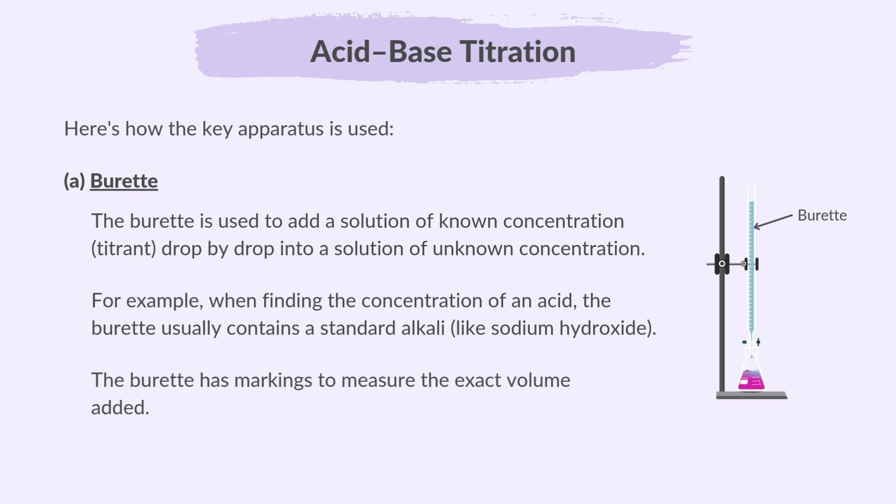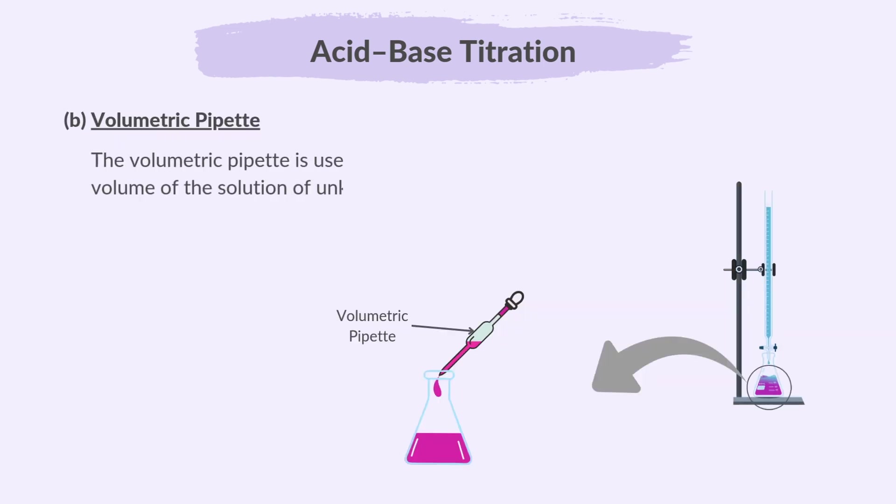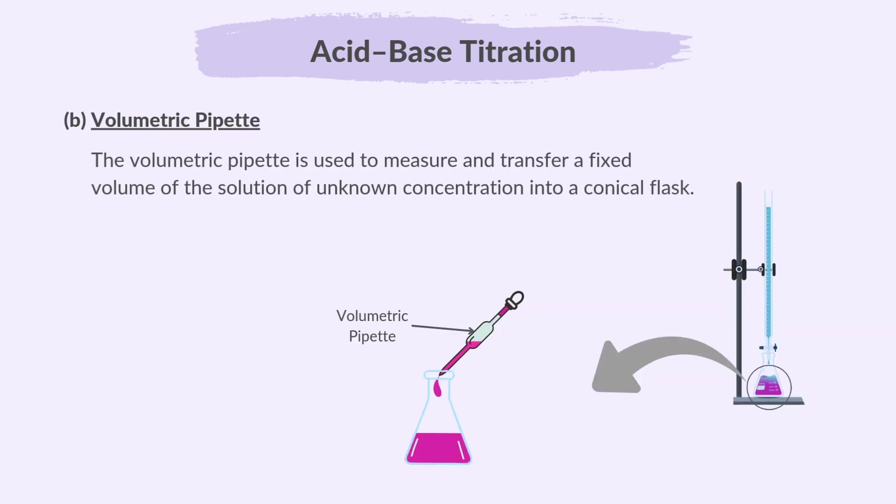The burette has markings to measure the exact volume of liquid added. The volumetric pipette is used to measure and transfer a fixed volume of the solution of unknown concentration into a conical flask.